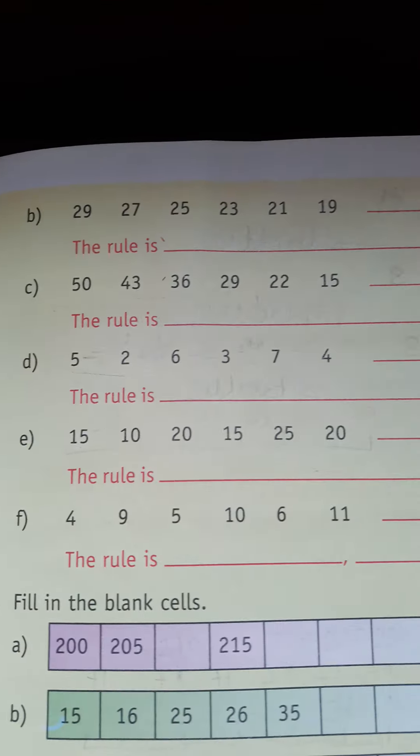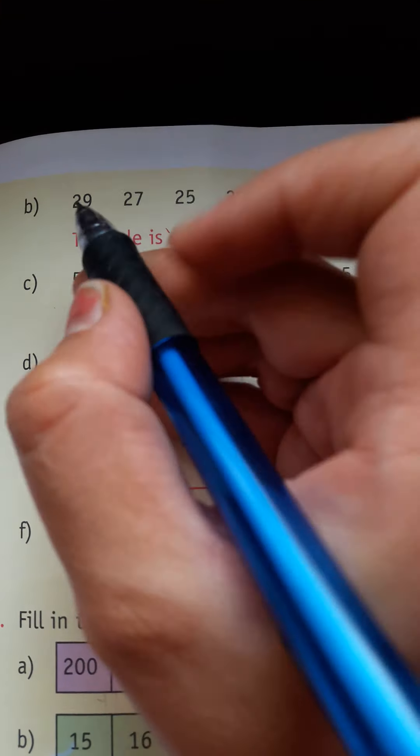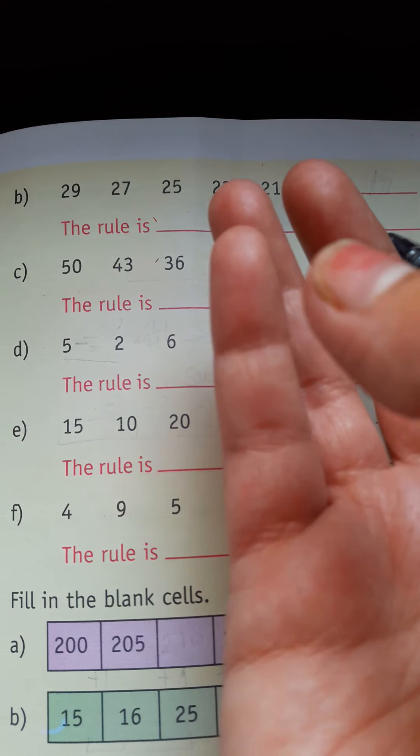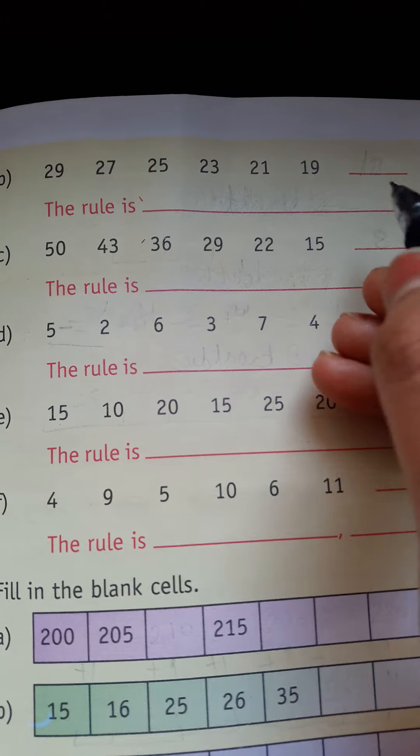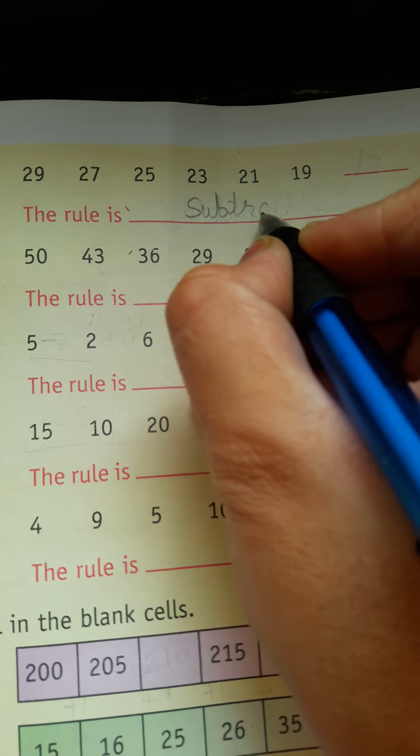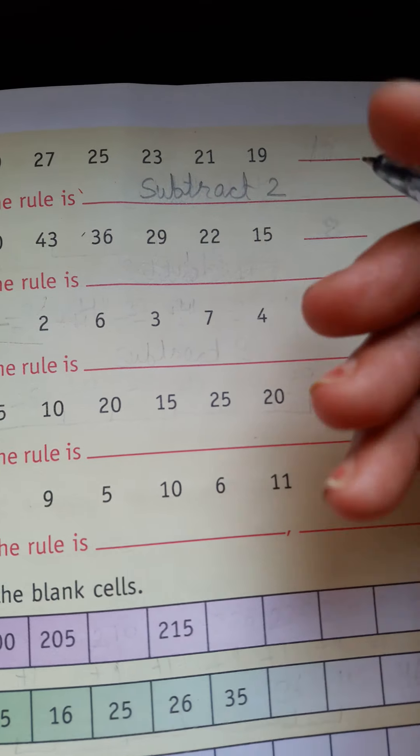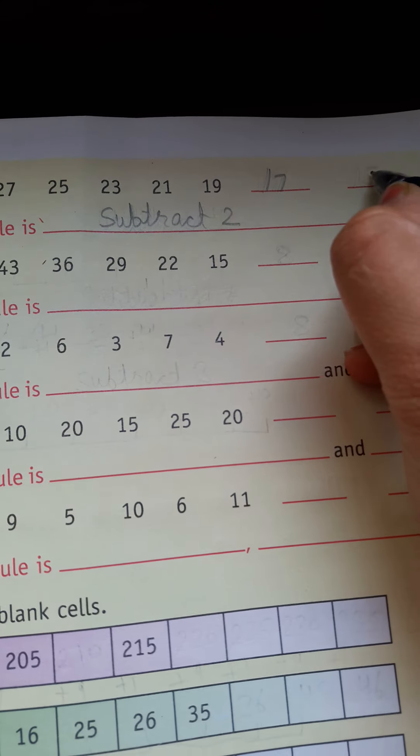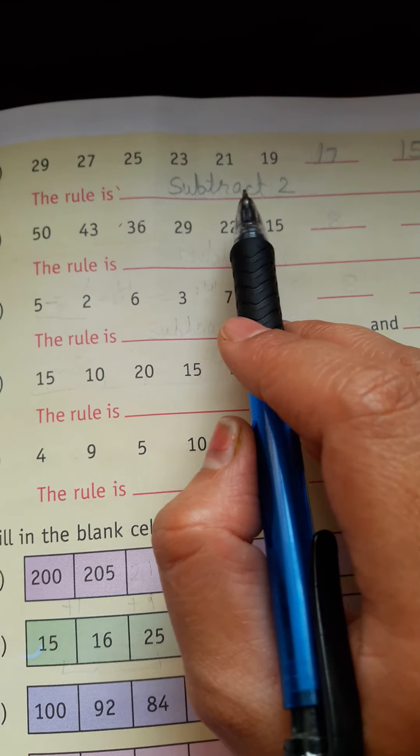29, 27, 25, 23, 21, 19. Going backward, after 29 comes 28, 27, 26, 25. Subtraction is happening, so what will it be? Subtract 2. And 19 minus 2 gives 18, 17, 15. So the rule is subtract 2.